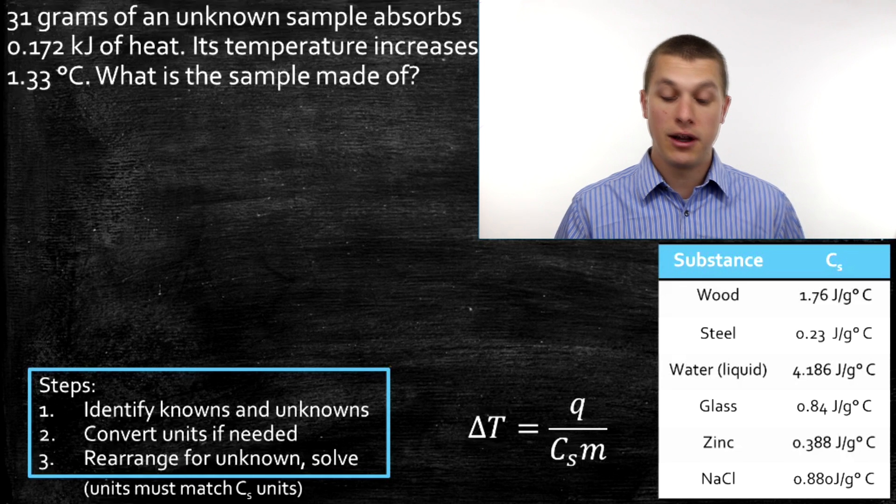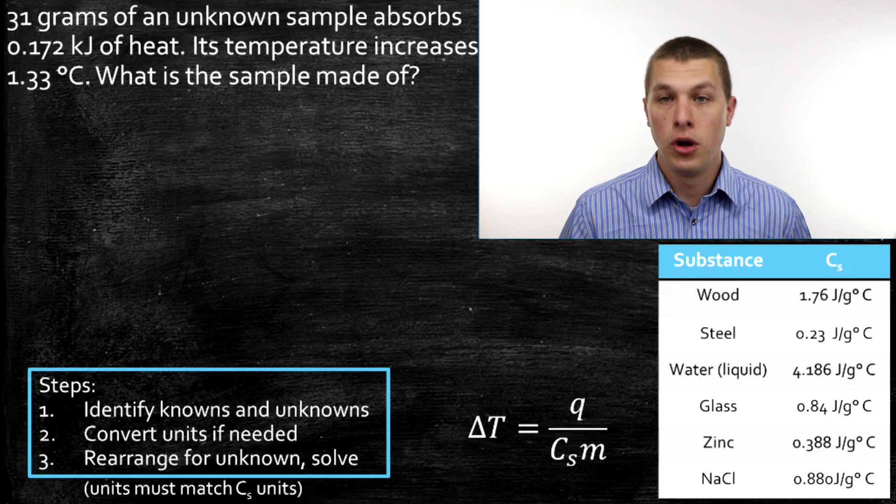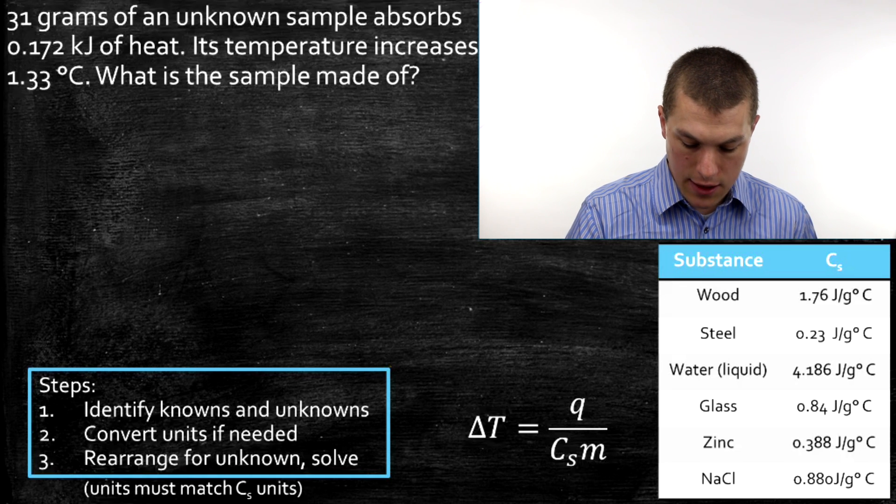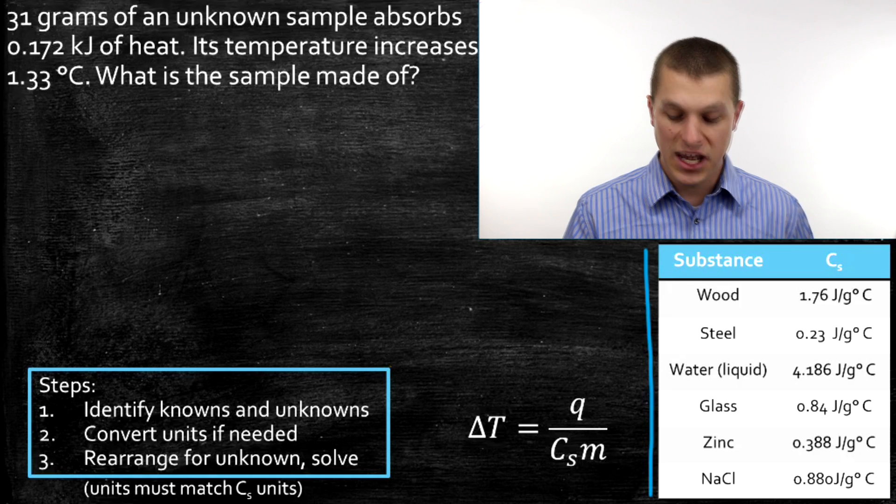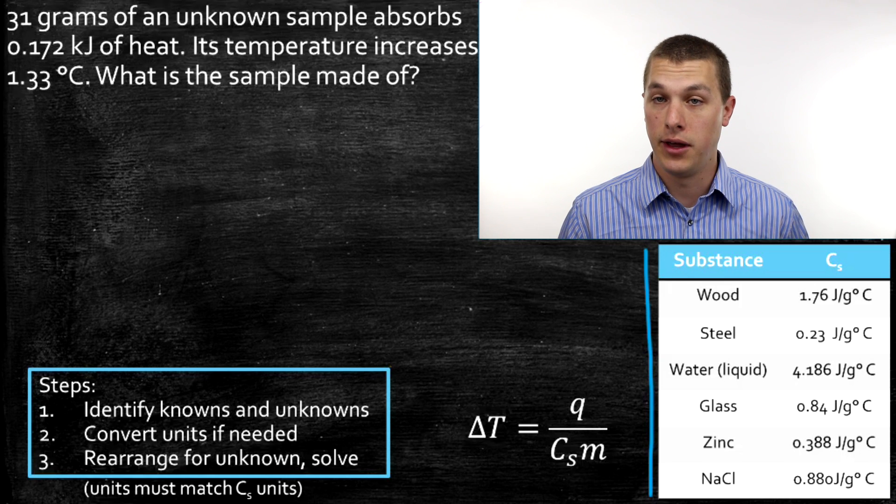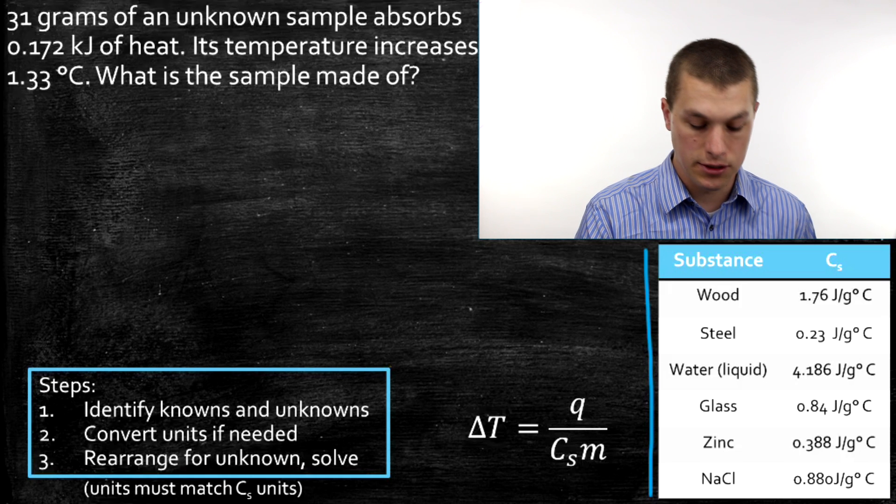So this is another very common form of specific heat capacity problem, where we actually will identify a material. And the way we'll do that is we'll calculate heat capacity, and then we'll go over to our table. And our table will list a bunch of different materials, and so we can look for the heat capacity we calculated and thereby identify the material.